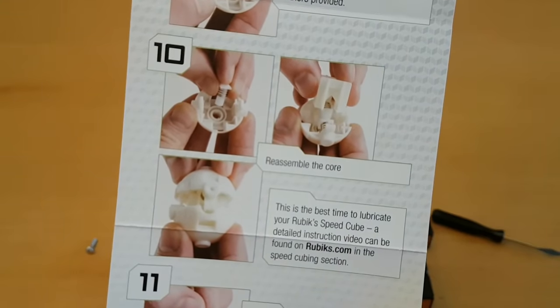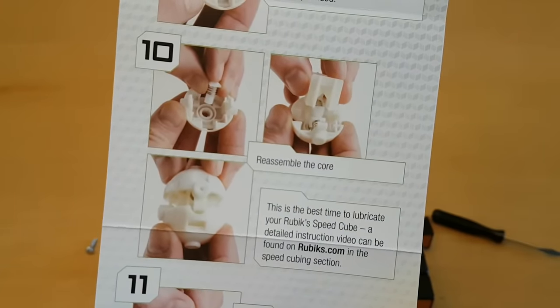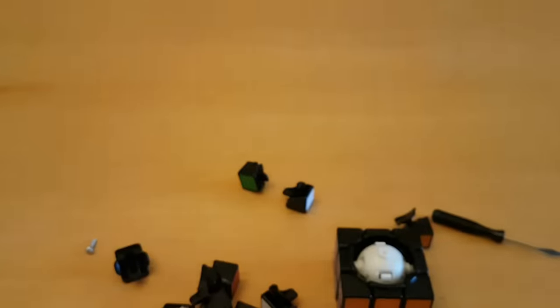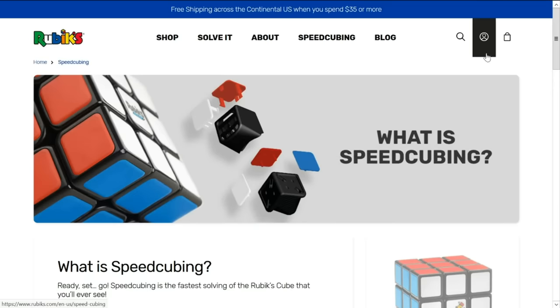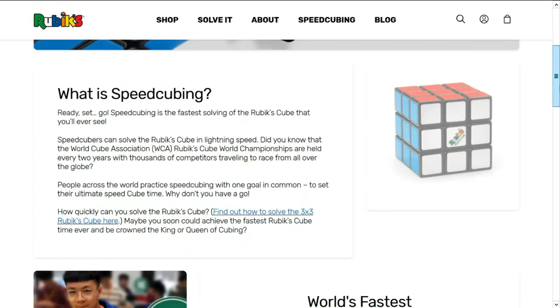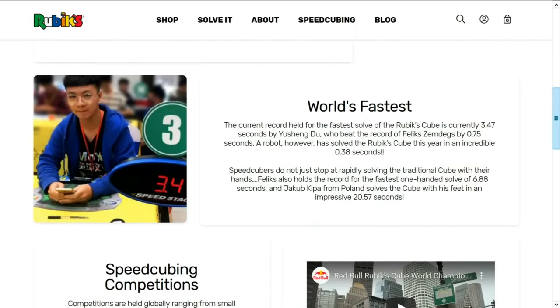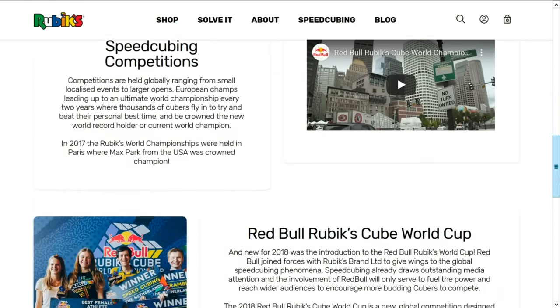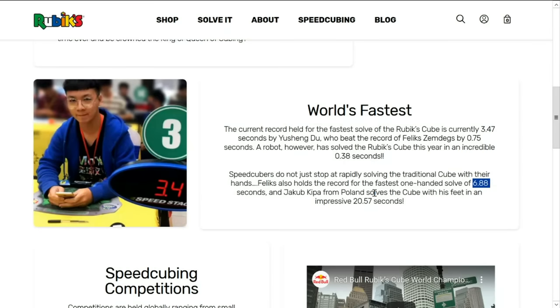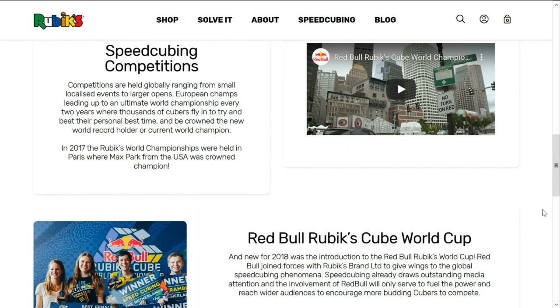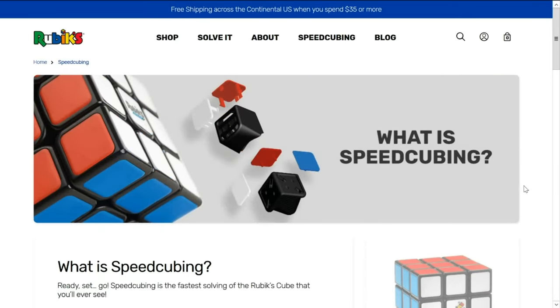I lube the cube at step 10, and they tell me to go on the website to find out how. I am not happy right now. So I went on rubix.com, and it says go to the speed cubing section, so I went there, and there is nothing about lube on this page. There's stuff about world records, which, by the way, isn't even up to date. Stuff about competitions, which is great. If you don't know what they are, they're basically events, not so much competitions, that you get to meet other cubers at. So this is some pretty great information, but nothing about lube here.